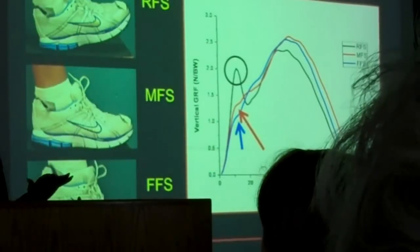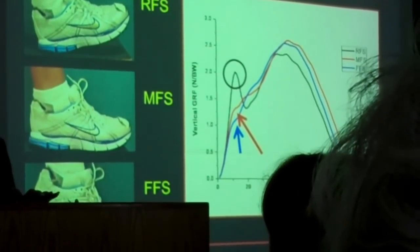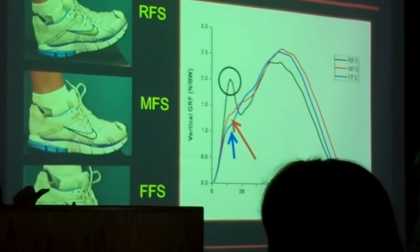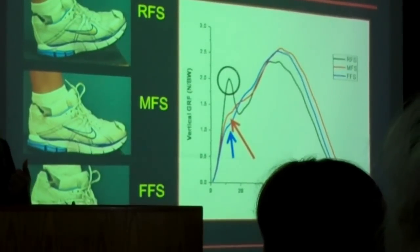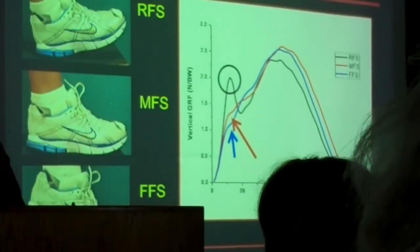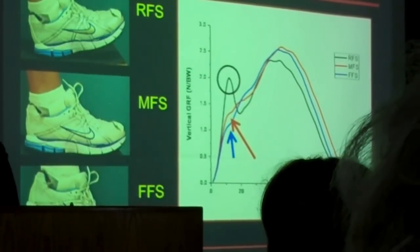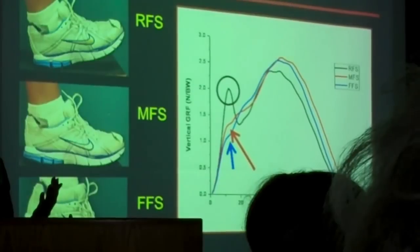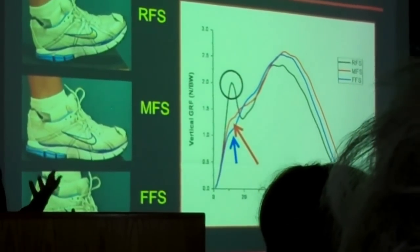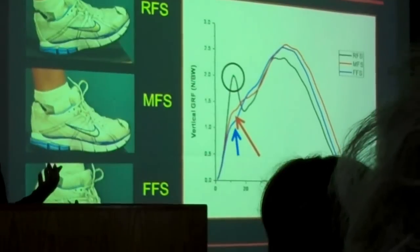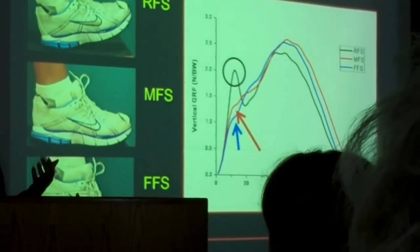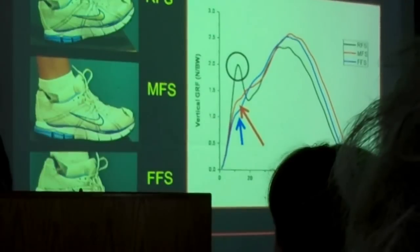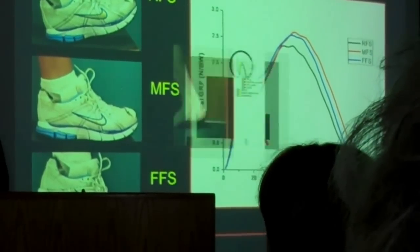So my thinking at this time was, maybe this is a very nice sort of compromise. Heel strikers have impact peaks and load rates that might be damaging to bone. Forefoot strikers have a lot of load on their Achilles and all the loads distributed under the forefoot because they tend not to bring their heel down. Midfoot strikers are landing flat, reduce the impacts, and the force gets distributed now across the entire surface of the foot. So lower stress because of larger area that the force is distributed on. So maybe it's a healthy compromise.